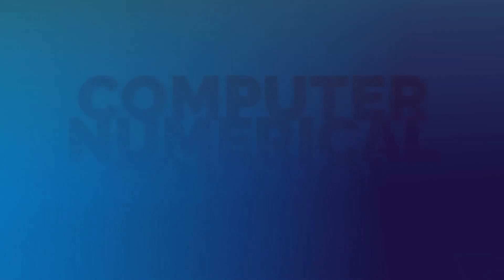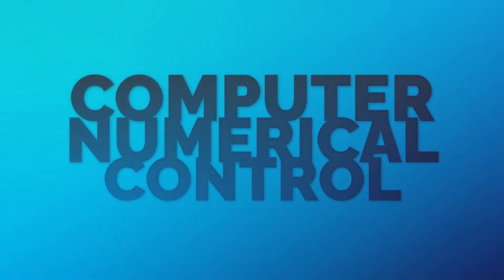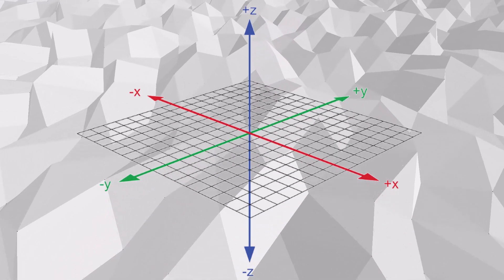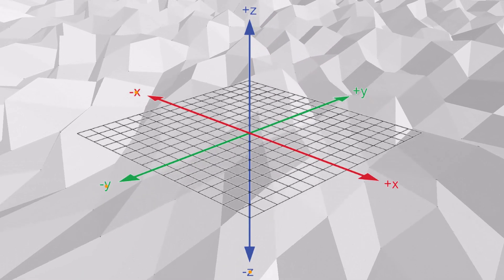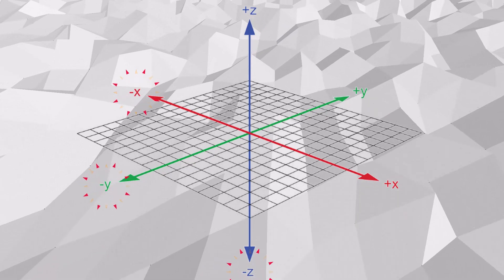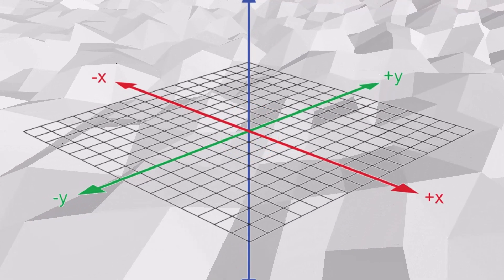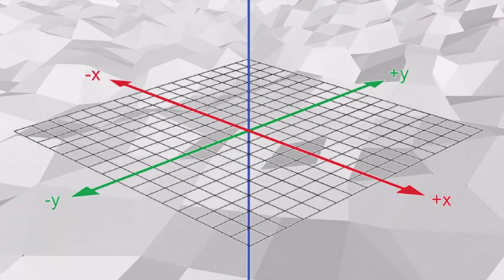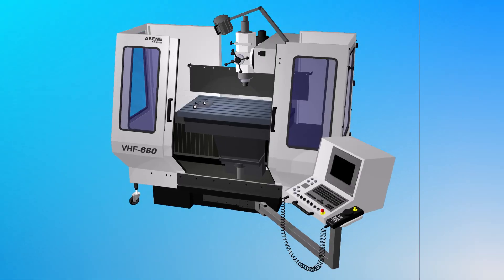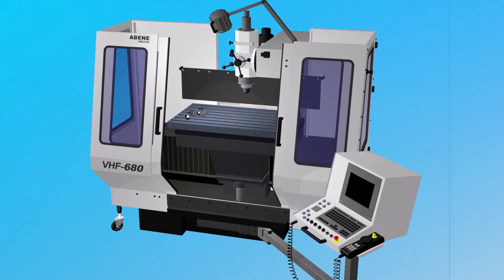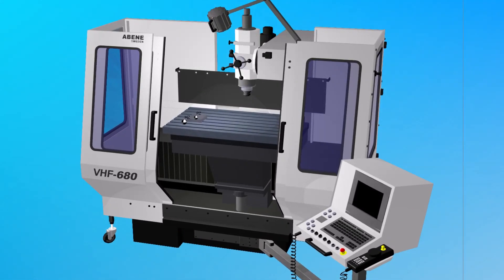Before we dive into G90 and G91, let's quickly review the CNC coordinate system. Just like in mathematics, CNC machines commonly operate in a 3D space with X, Y, and Z axes. The machine's zero or home position is usually the reference point for all movements. Depending on the machine and its setup, this can be the machine's physical limits or a specific location on the workpiece.